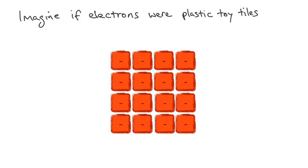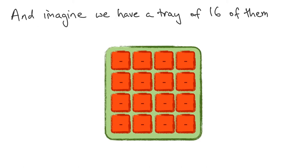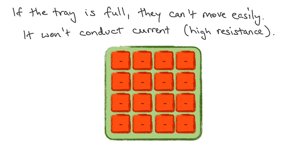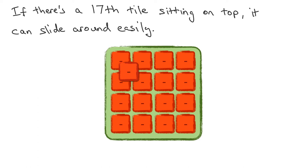For the moment I'd like you to imagine that electrons were tiny square plastic toy tiles with a negative charge, and I would like you to imagine that you've got 16 of them and that you have a tray that is just the right size to hold 16 tiles. Now if we've got 16 tiles in this 16-tile size tray and they are tightly packed in there, then the tiles can't move. If the electrons can't move, charge can't move, then current can't flow, and so that is going to have high resistance. But I'd now like you to imagine that you have a 17th tile sitting loose on the top. That loose 17th tile can move, and so now we've got charges that can move, current can flow, and so that can conduct.